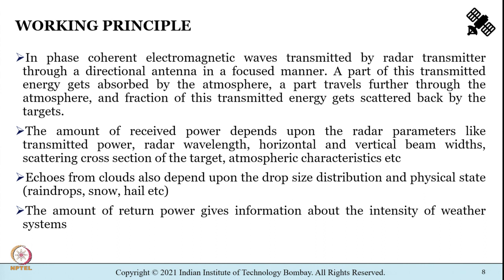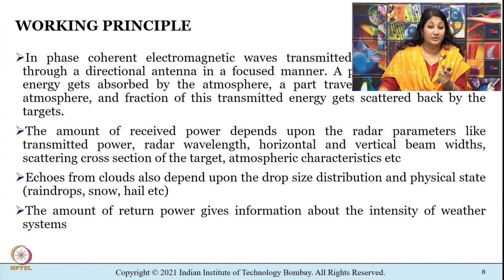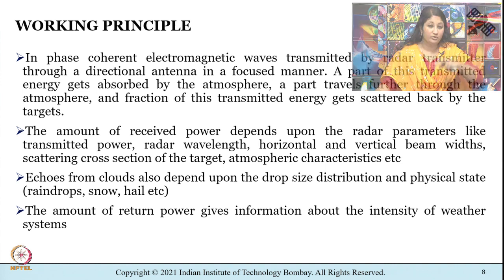The amount of received power depends on radar parameters such as transmitted power, radar wavelength, horizontal and vertical beam width, scattering cross section of the target, and atmospheric characteristics. Echoes from clouds also depend on drop size distribution and the physical state of precipitation — whether it is raindrops, snowfall, or hailstorms. The return power gives information about intensity of weather systems, antenna azimuth and elevation give location and height of cloud systems, and travel time of electromagnetic waves is used to estimate range from the radar.